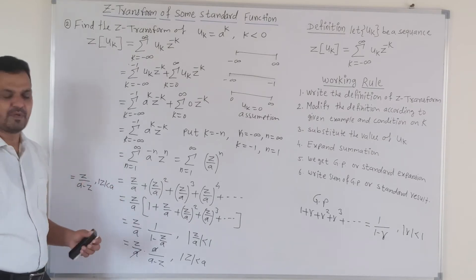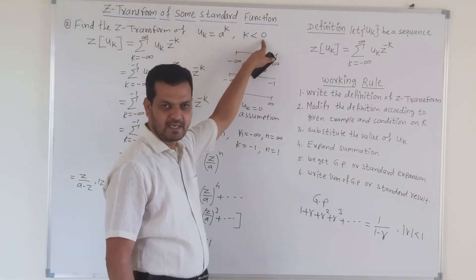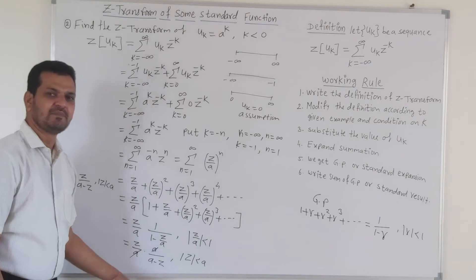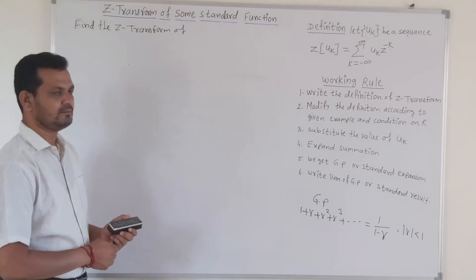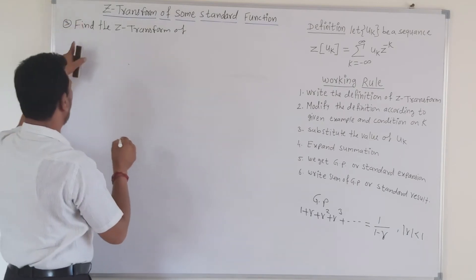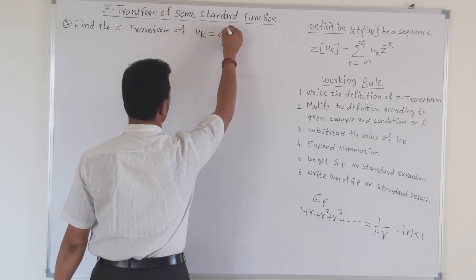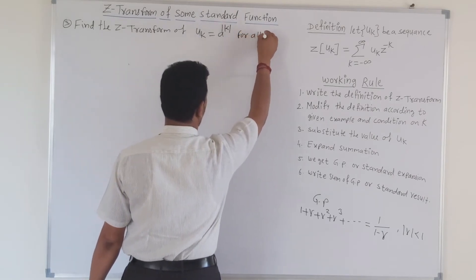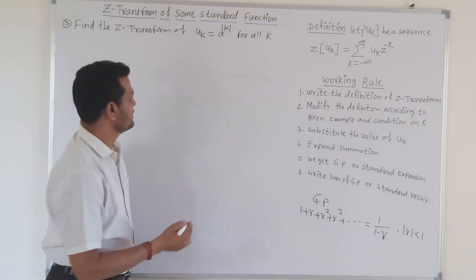The difference between Example 1 and Example 2 is only the condition on k. Even though the sequence is the same, changing the condition changes the method of solution and the result. Now let's take Example 3: find the Z-transformation of u_k equal to a raised to |k| (modulus of k) for all k.